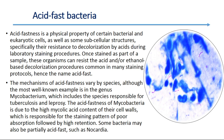Acid-fast bacteria: acid-fastness is a physical property of certain bacterial and eukaryotic cells, characterized by resistance to decolorization by acids during laboratory staining procedures. They are resistant to acid or ethanol-based decolorization. The mechanism of acid-fastness varies by species, although the most well-known example is in the genus Mycobacterium, which includes the species responsible for tuberculosis and leprosy. The acid-fastness of mycobacteria is due to the high mycolic acid content of their cell walls, which is responsible for the staining pattern of poor absorption followed by high retention. Some bacteria may also be partially acid-fast, such as Nocardia.